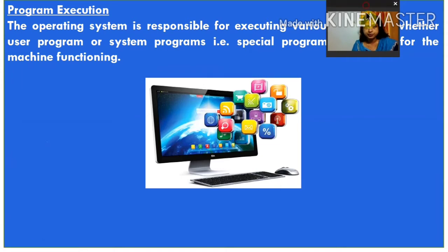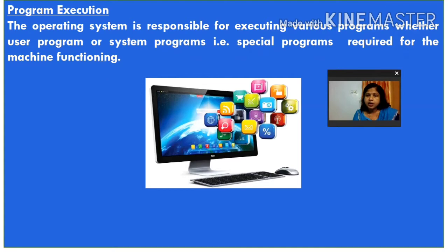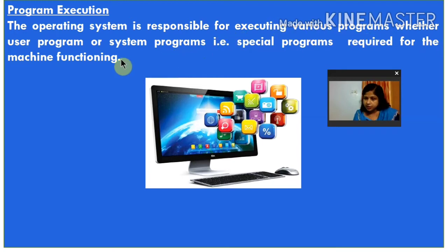Program execution: the operating system is responsible for executing various programs, whether user programs or system programs. System programs are special programs required for machine functioning — for example, compiler and interpreter. The operating system is responsible for executing all programs, whether application software or system software.